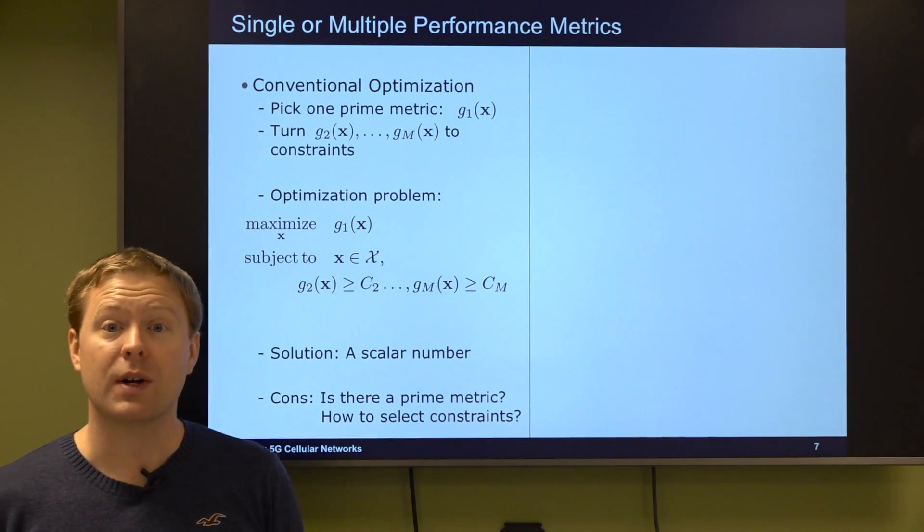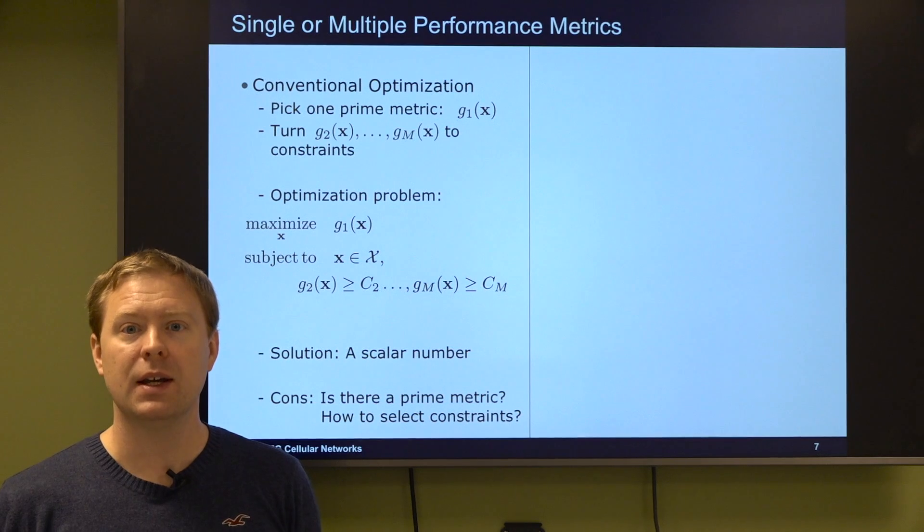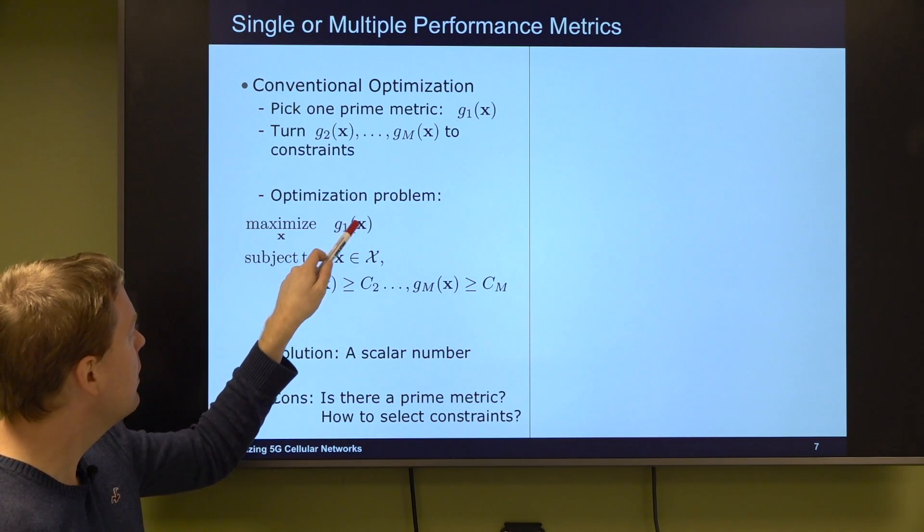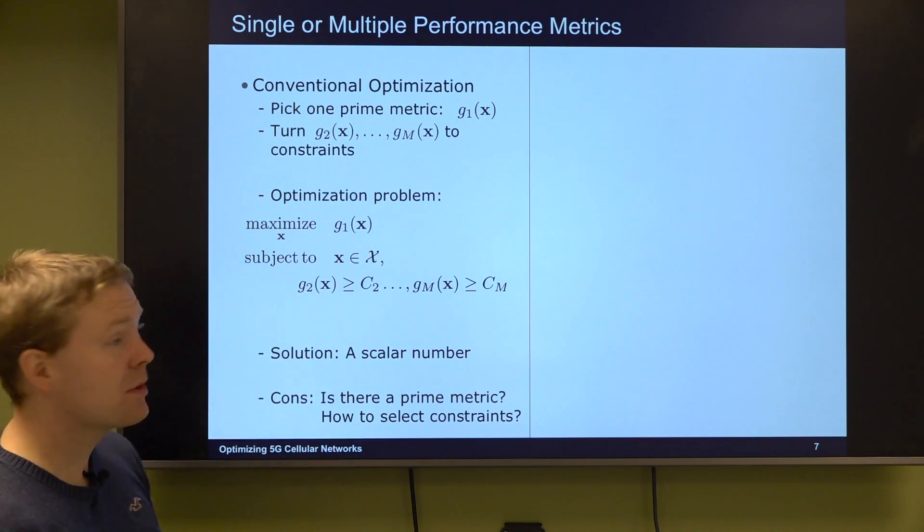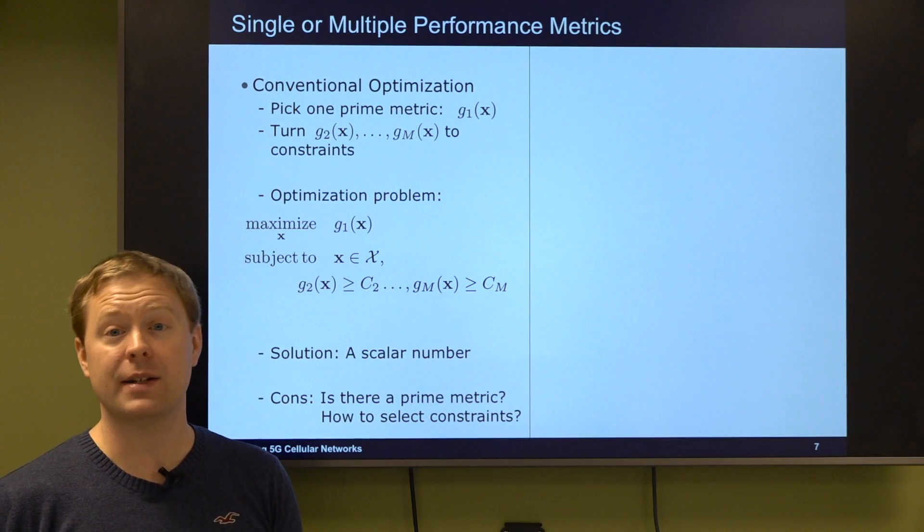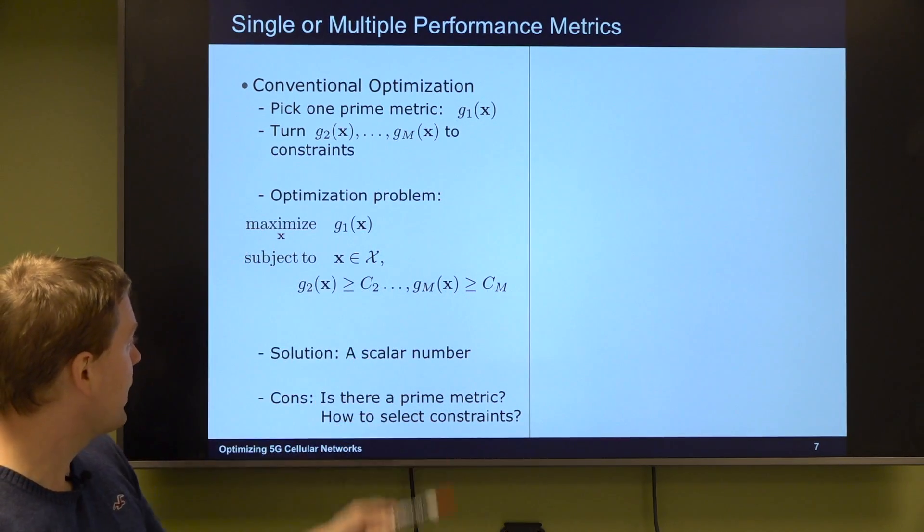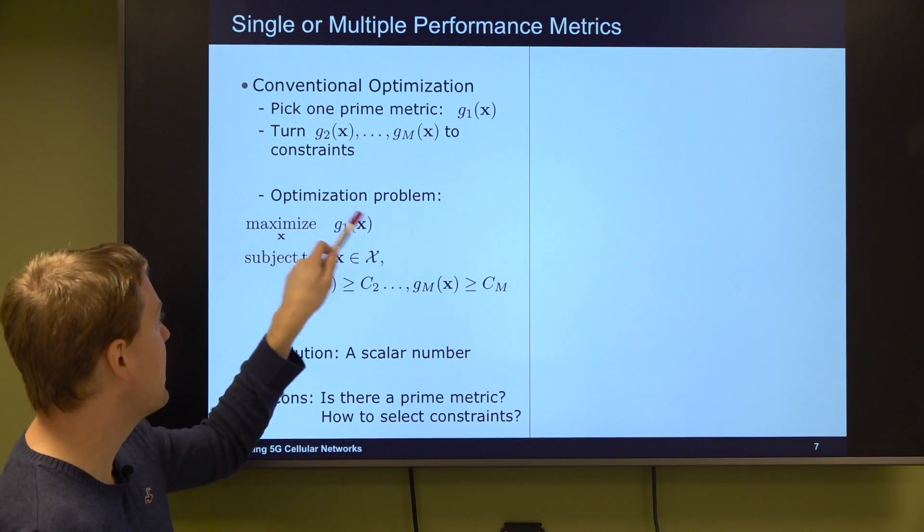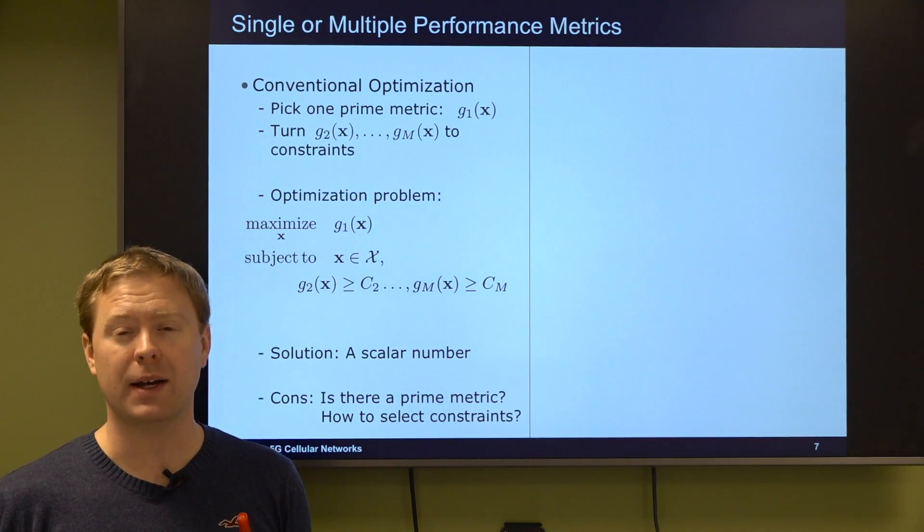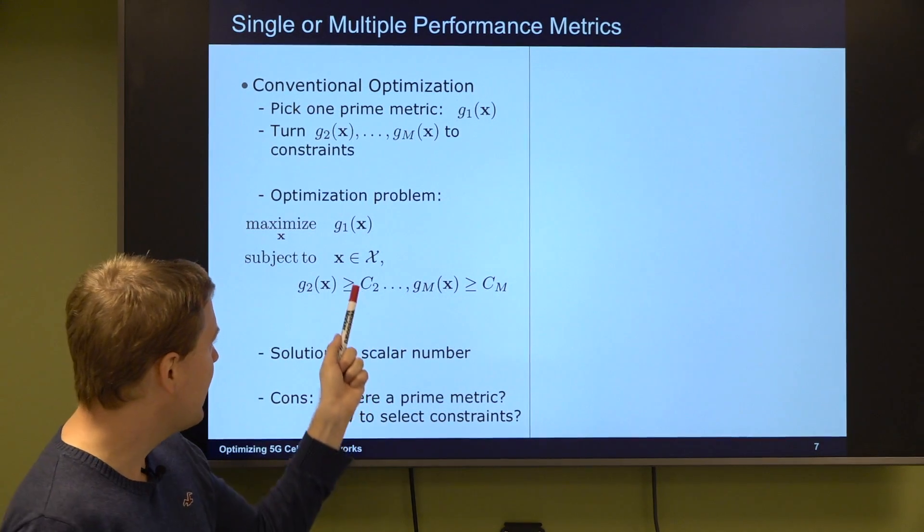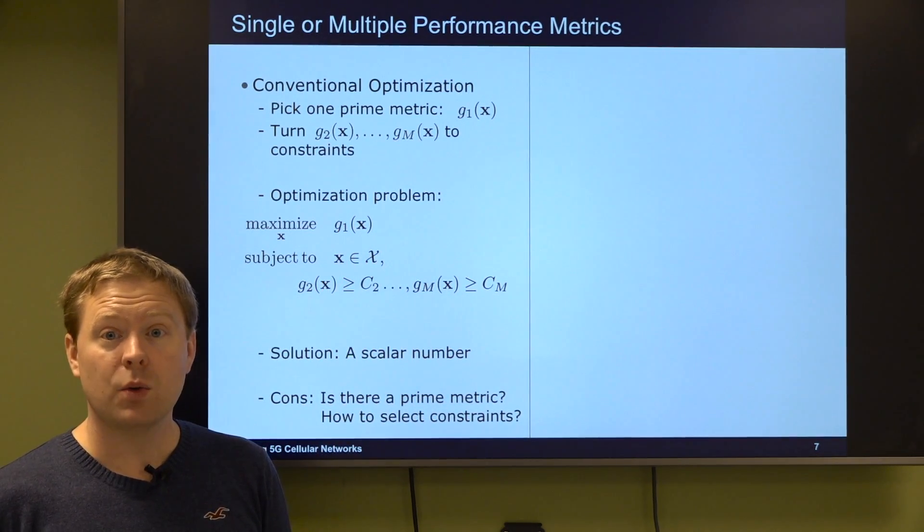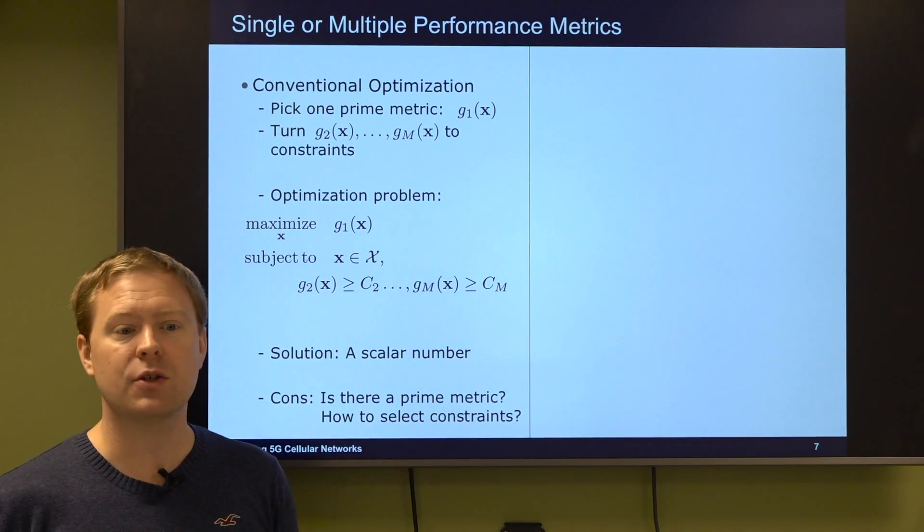The conventional optimization approach here is that we select one of the metrics and we say this is my prime objective and then I'm turning all the other objectives into constraints. We would like to maximize say g1 with respect to x and select x from the resource bundle, and for all of the other metrics g2 to gm we have selected in advance some values c2, cm. But the question is, is there just one metric that we care the most about? And even if there is, how can we select c2 and cm?